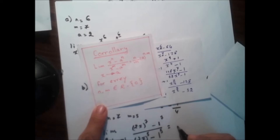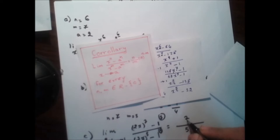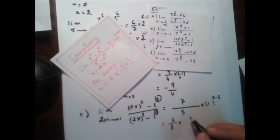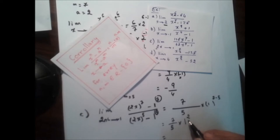Now we have the same form as the corollary. This is equal to n over m, so 7 over 5, times a to the power of n minus m — which is 1 to the power of 7 minus 5, giving 1 to the power of 2. Since 1 squared is 1, this equals 7 over 5.